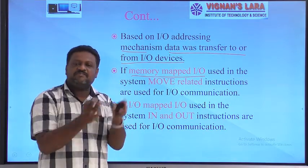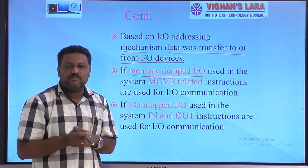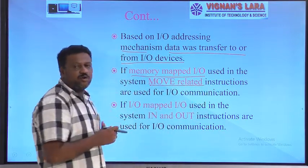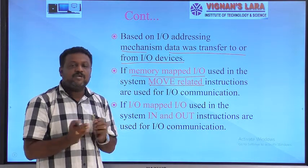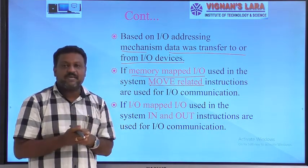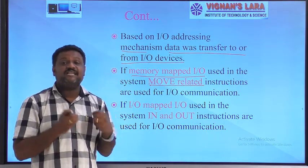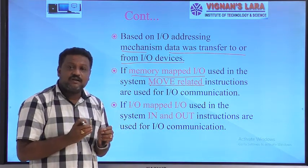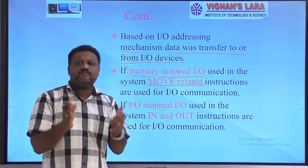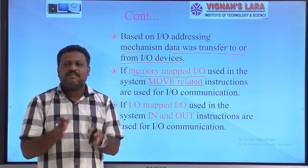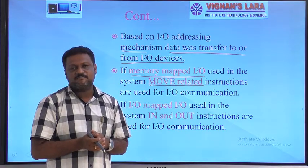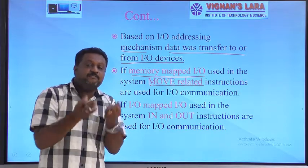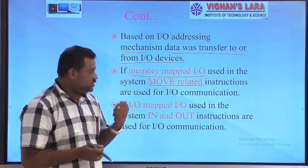To transfer data between an I/O device and a CPU using memory-mapped I/O, we use only memory-related instructions — what I call MOV-related instructions. In memory-mapped I/O, the CPU treats each and every I/O device like a memory location. Once it treats I/O devices like memory locations, it uses memory-related instructions to communicate with them.